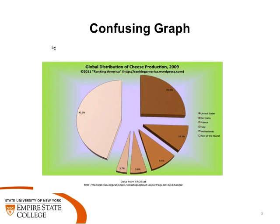The other thing that's not easy to read about this graph is that the rest of the world is about 45%. Alexandria noted that she really liked it because she's a big fan of cheese, and she found it interesting even though you can't really read it very well.